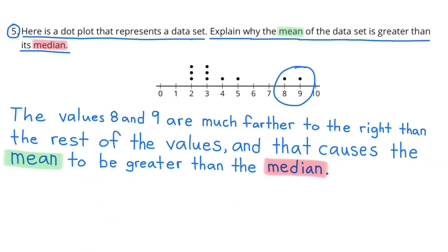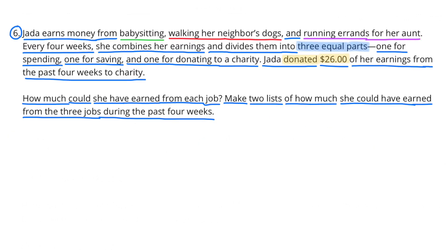Number six: Jada earns money from babysitting, walking her neighbor's dogs, and running errands for her aunt. Every four weeks, she combines her earnings and divides them into three equal parts: one for spending, one for saving, and one for donating to charity.